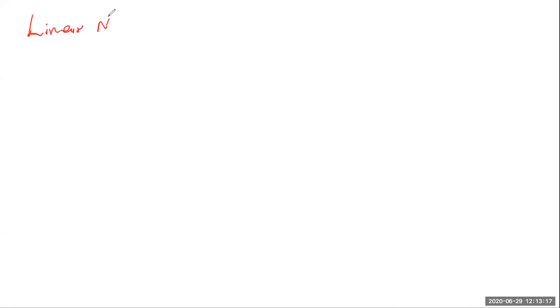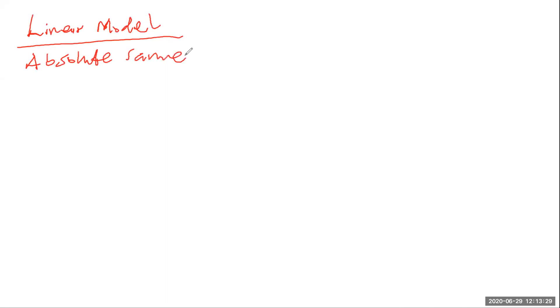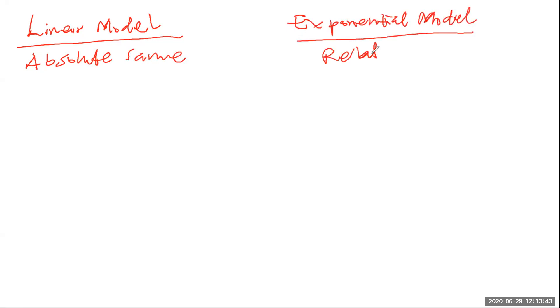For a linear model, when absolute change stays the same, we have a linear model. And for an exponential model, relative change stays the same.